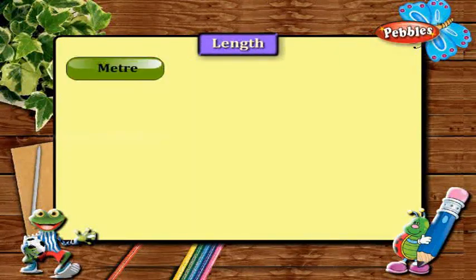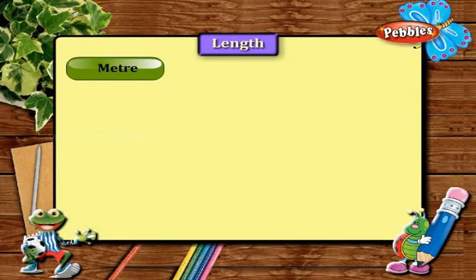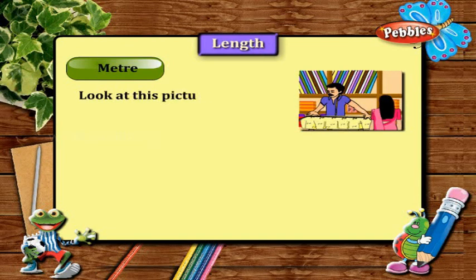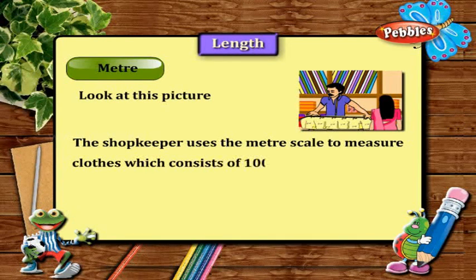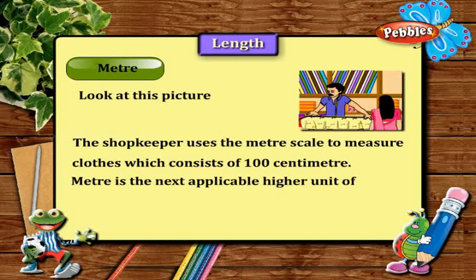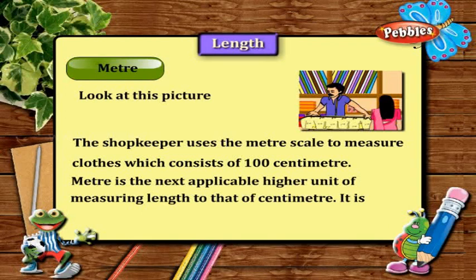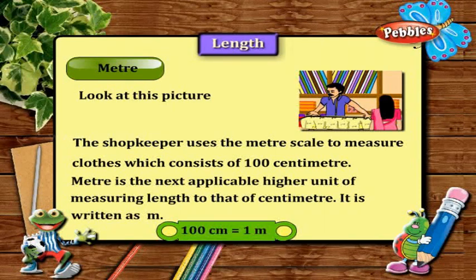Meter. Look at this picture. The shopkeeper uses the meter scale to measure clothes, which consists of 100 centimeters. Meter is the next applicable higher unit of measuring length above centimeters. It is written as m. 100 centimeters is equal to 1 meter.